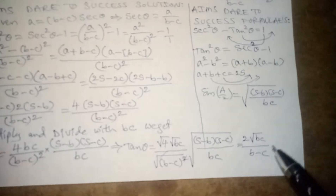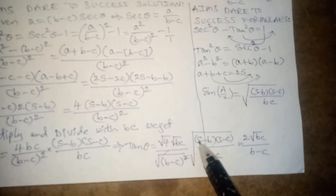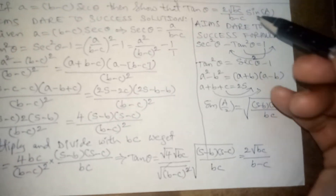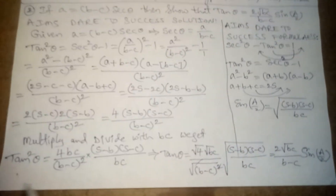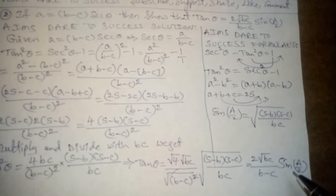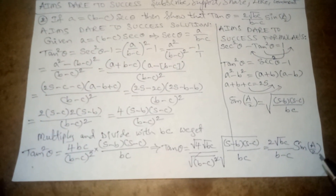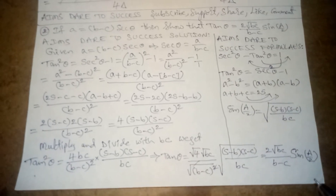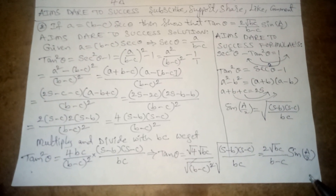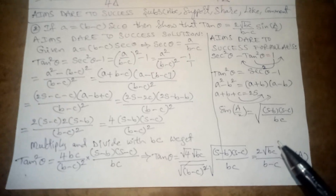So we have tan theta equals 2 times root(bc) divided by (b minus c), times root((s minus b)(s minus c) divided by bc). This last term is the formula for sine(A/2). Therefore tan theta equals 2 times root(bc) divided by (b minus c) times sine(A/2). Hence proved. Please subscribe to our channel, support us, like, comment, and share with your friends.